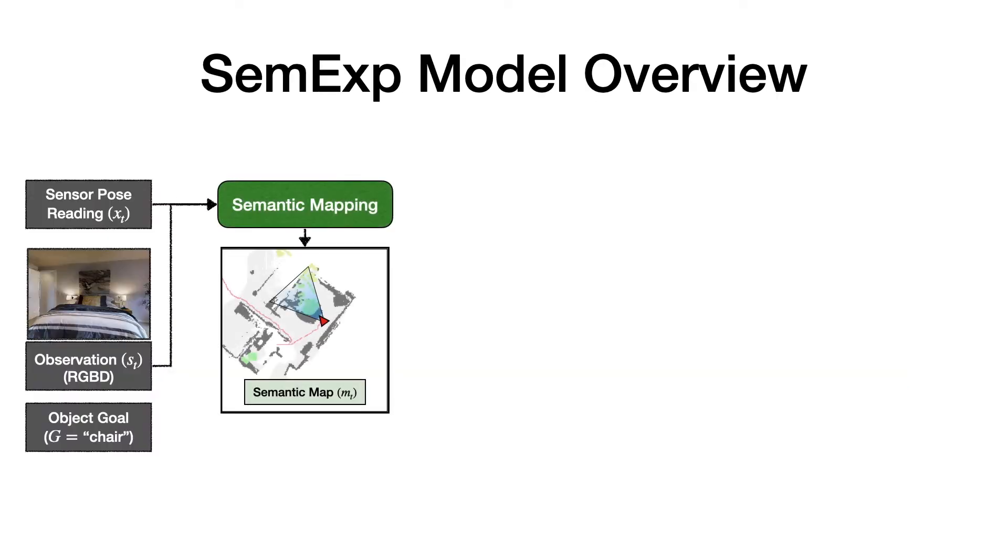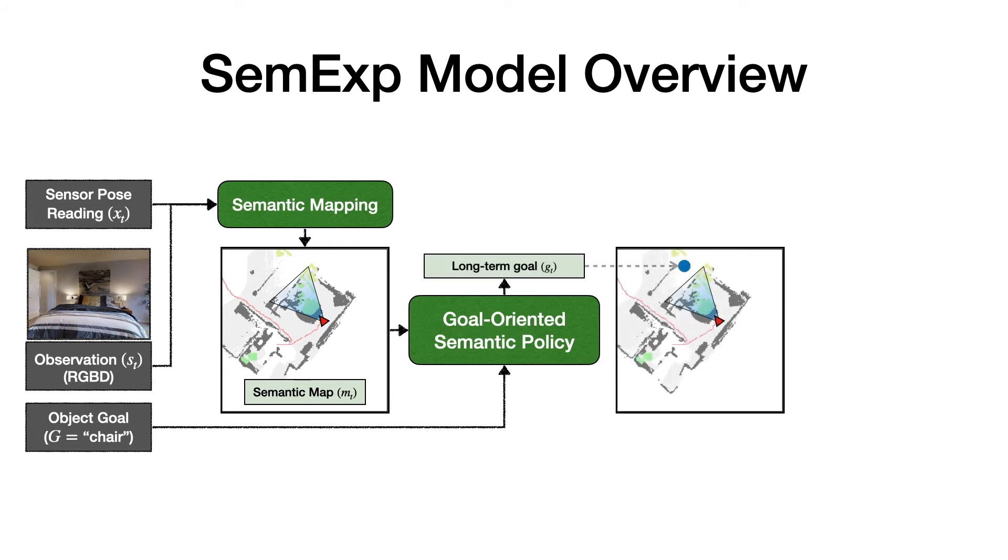Once we have the semantic map, we pass it to a goal-oriented semantic policy to decide a long-term goal. The long-term policy in the Active Neural SLAM model was goal-agnostic, trained to maximize explored area based on only obstacle maps. In contrast, the long-term policy here uses semantic maps and is goal-oriented, meaning that it tries to minimize the time required to reach the object goal instead of maximizing coverage. Once the long-term goal is selected, a deterministic local policy uses analytical planning to reach the long-term goal from the current location.